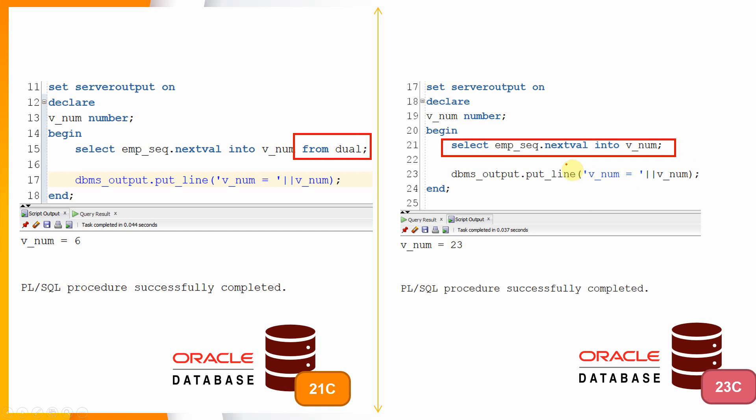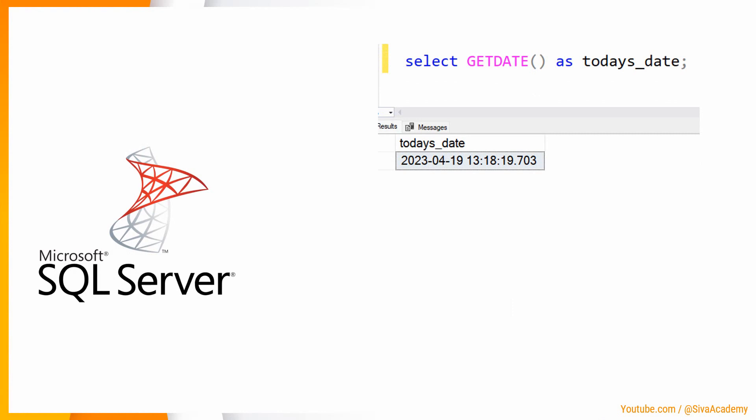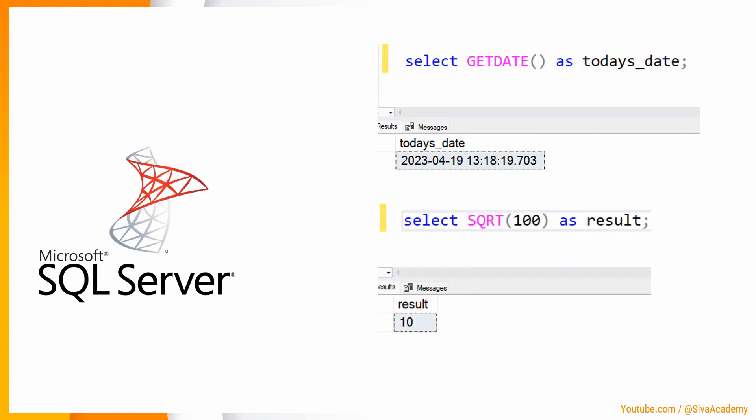This feature is specific to Oracle because this behavior is already the default in most other databases. In SQL Server, to fetch the current date you simply write SELECT GETDATE() — there is no DUAL concept and no mandatory FROM clause. Similarly, you can write SELECT SQRT(100) AS result without any FROM clause. Only in Oracle did we have the DUAL concept, and from 23c onwards Oracle is in sync with most other databases — we no longer have to write the FROM clause.